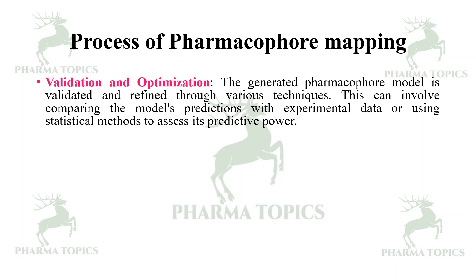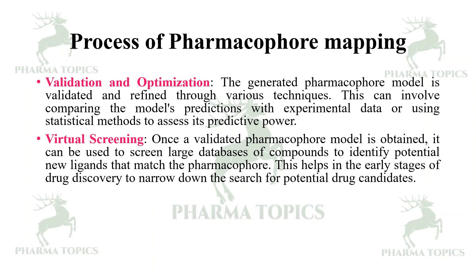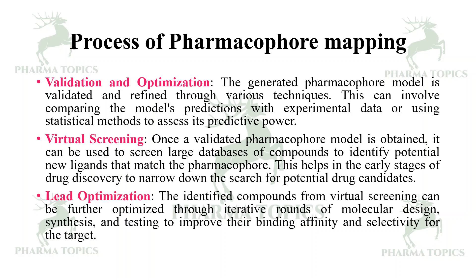The generated pharmacophore model is then validated and refined through various techniques, comparing the model's predictions with experimental data or using statistical methods to assess its predictive power. Once validated, the pharmacophore model can be used to screen large databases of compounds to identify potential new ligands. Finally, in lead optimization, the identified compounds from virtual screening are further optimized through iterative rounds of molecular design, synthesis, and testing to improve binding affinity and selectivity.